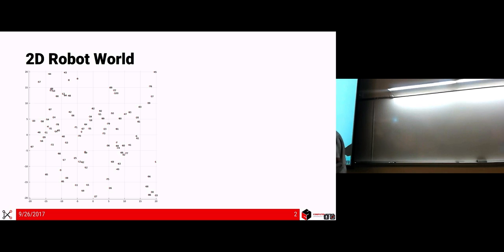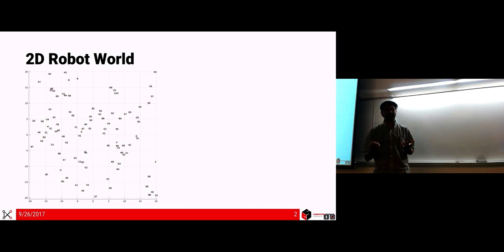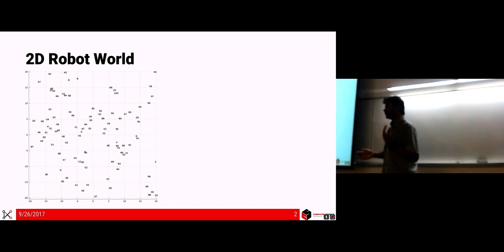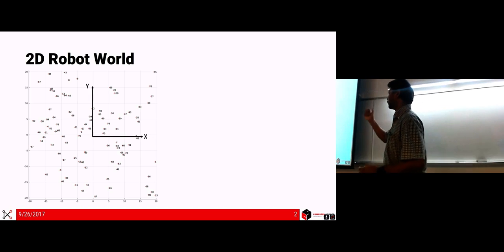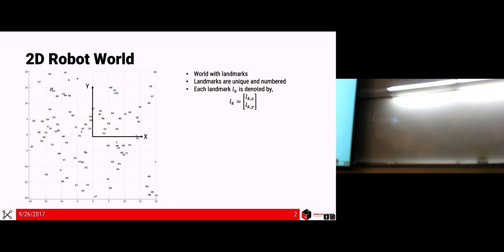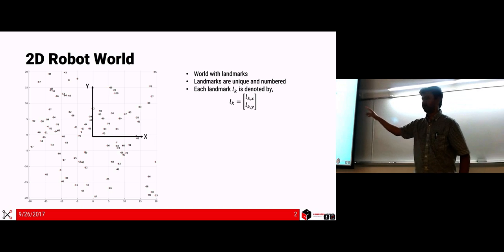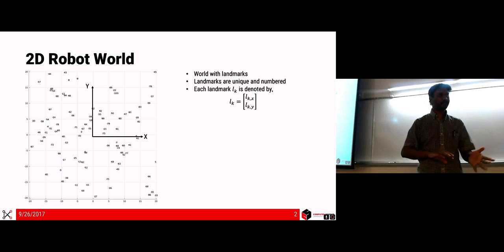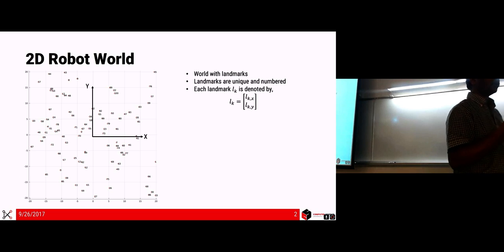If you see this landmark you'll basically see its number, say number one. This makes life easier because it avoids you having to match and figure out which landmark it is — think of it as having N different colored bottles. Your sensor always gives you the correct ID. We define a coordinate axis where X is horizontal and Y is vertical — no Z because it's a 2D robot.